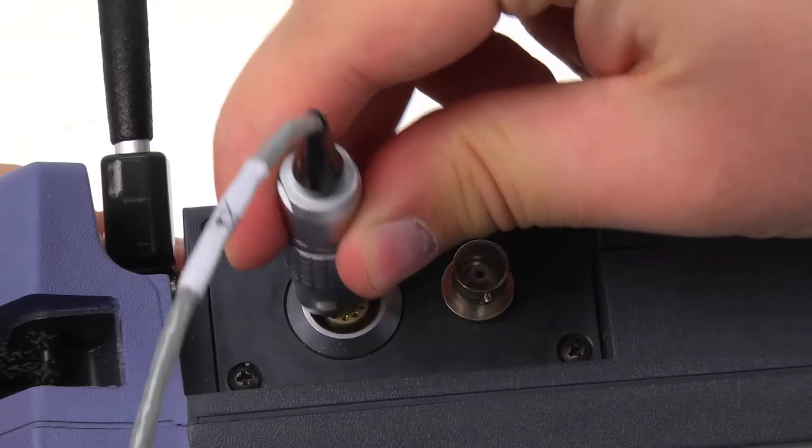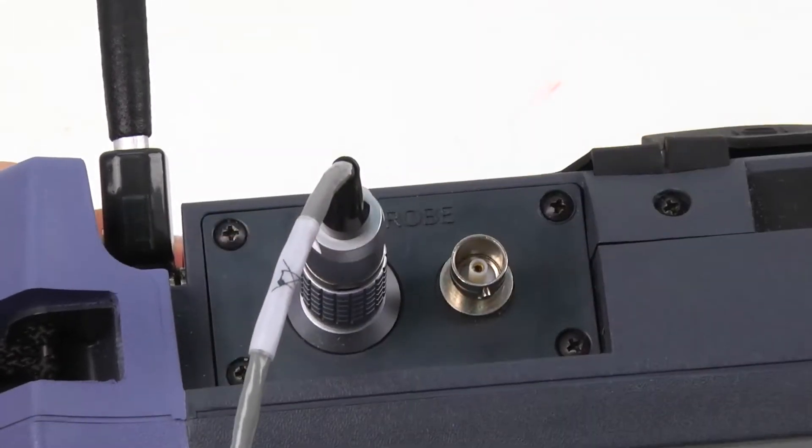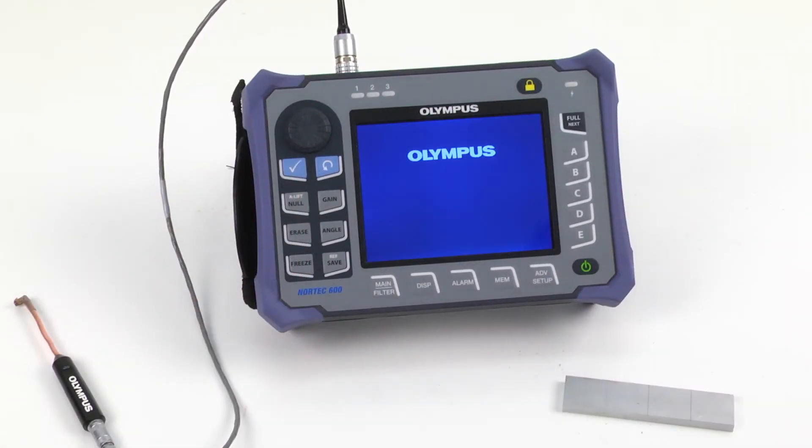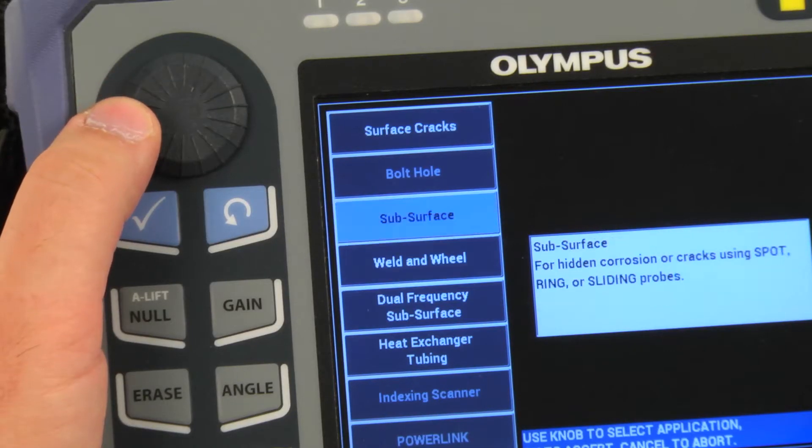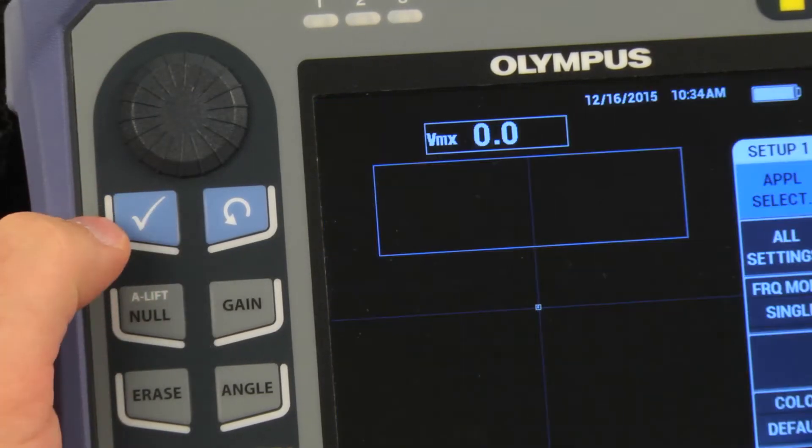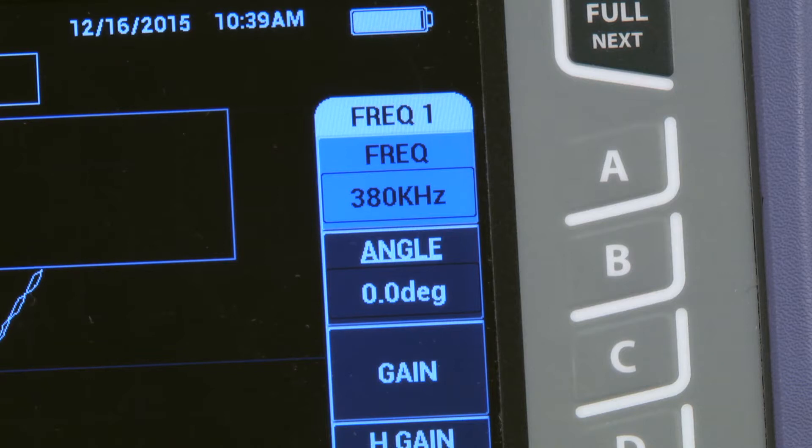Connect the probe to the Nortec 600 and turn the instrument on. With the latest software revision, the application selection menu will pop up automatically. Select surface cracks and press the checkmark key. Enter the correct test frequency. For our purposes, we will use a default frequency of 500 kHz.